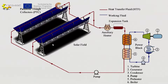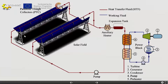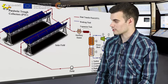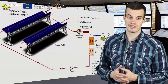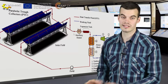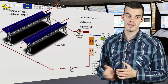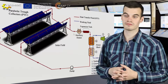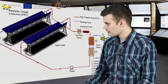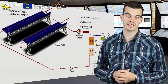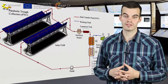Here we can see an example. The HTF enters in this end and it goes out in this end. Along this journey it has gained more or less 100 degrees of temperature. The temperature at the beginning is more or less 293 degrees and at the end is 393 degrees. In following units we will see that this temperature is the limit because of cracking, degradation reasons and other reasons. And here we can see the auxiliary heater, which is very useful to support enough energy to the HTF when there is a lack of solar radiation.